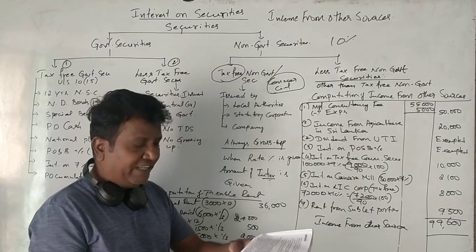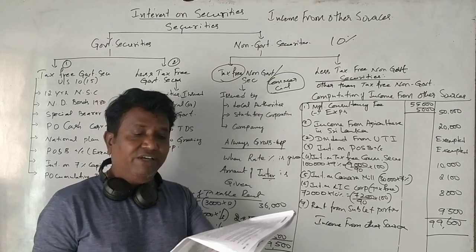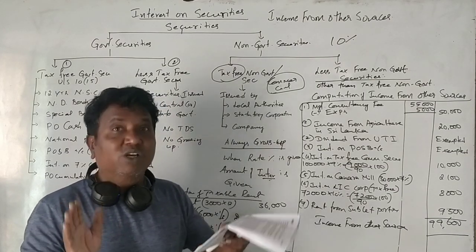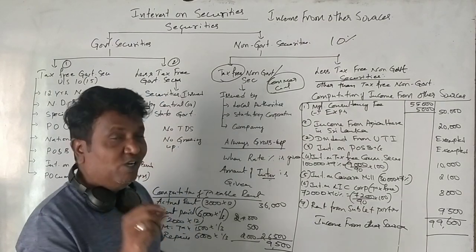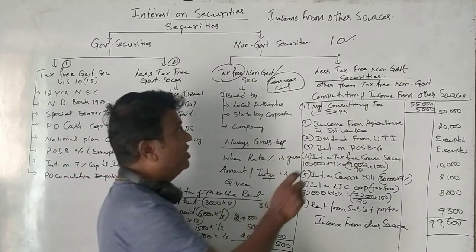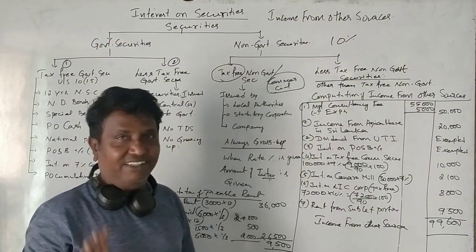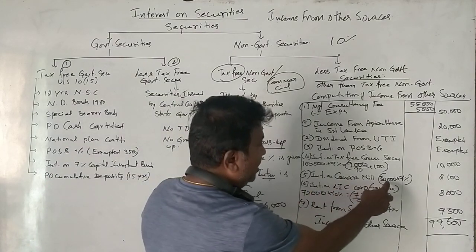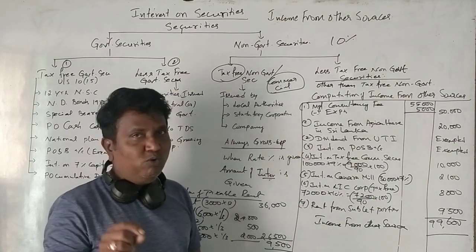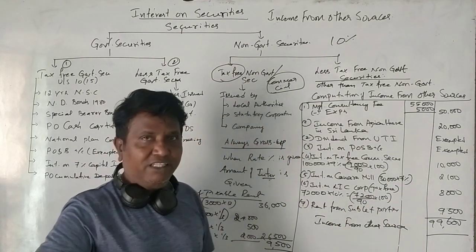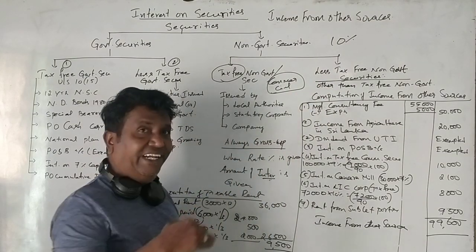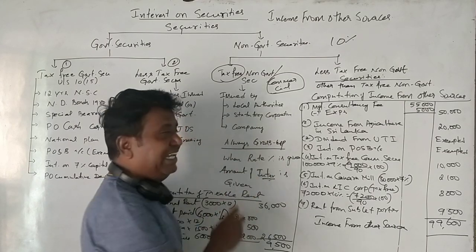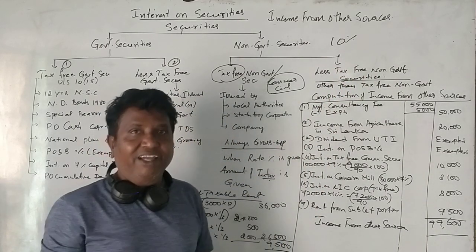Next point: ₹30,000 in 7% debentures of Kenara Mills Limited. Kenara Mills is a private, non-government company. The word 'tax free' appears here too. So for tax-free non-government securities, the investment is ₹30,000 and the interest at 7% is ₹2,100. This is fully taxable and must be grossed up.